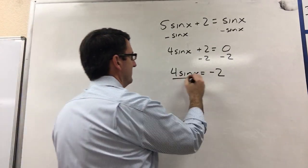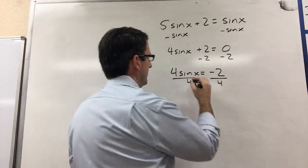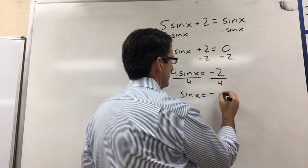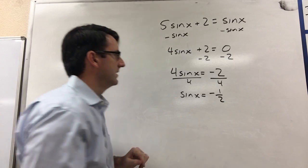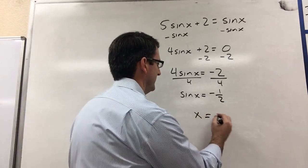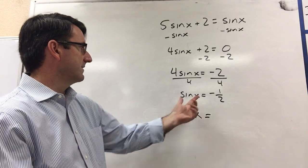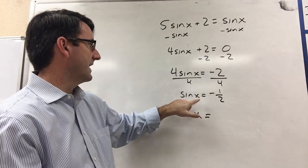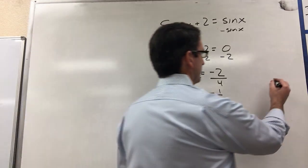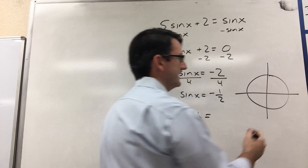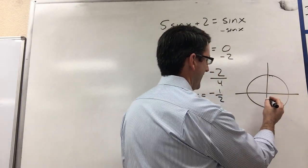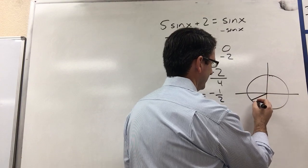Now we can divide both sides by 4. We get sine x is equal to negative 2 fourths, which is negative 1 half. And now x is going to be all the angles where the sine of that angle is going to be negative 1 half. So if we go to the unit circle, sine is going to be the y coordinate. So the y coordinate is negative 1 half down here.